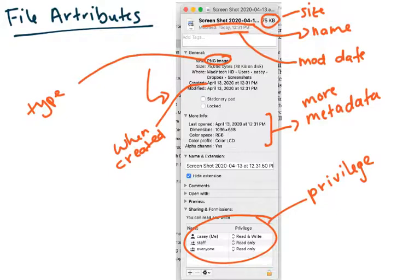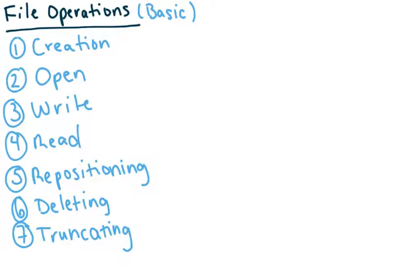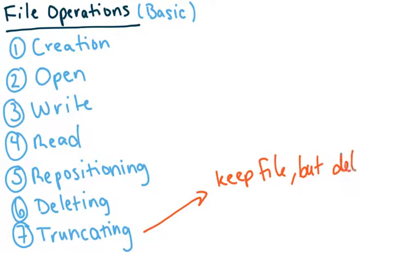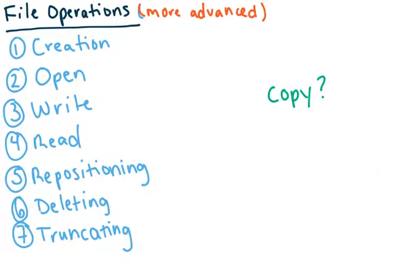Later on we'll introduce the file control block which will keep track of a lot of this metadata. For file operations, there are some basic ones that need to be available on all OSes: create, open, write, read, reposition within a file (supporting random or sequential access), delete, and truncate. Truncation is where we want to keep the file but delete its contents. These are the seven basic operations.